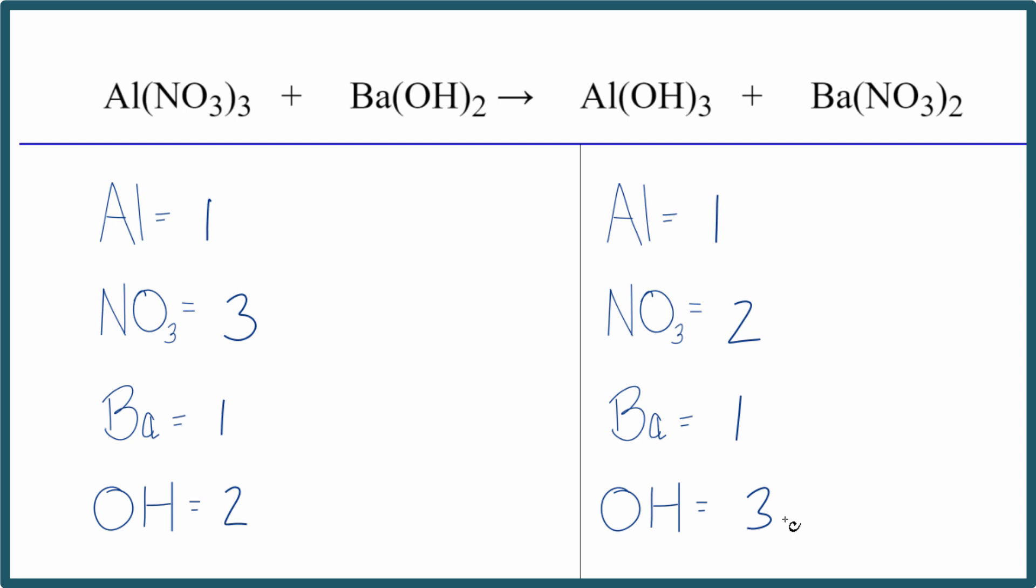Right off, this one's a little challenging because we have odd and even numbers on both sides. So what I'm going to do is try to make this nitrate an even number. I'm going to have the one nitrate times three, three of these times two. That'll give me six, and the two applies to everything.